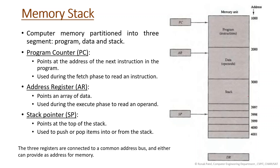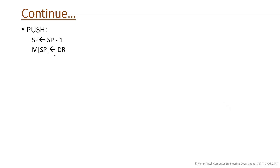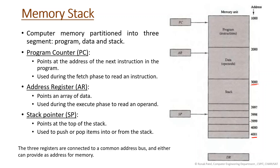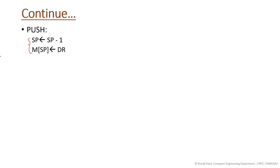In this memory stack, the portion from address 3000 to 4001 is designated as the stack. For the push operation here, SP is decremented first (SP = SP − 1), and then the data from DR is placed at that address — so the stack grows downward. This is different from the register stack where we were incrementing SP on push. The direction of growth depends on your stack organization.